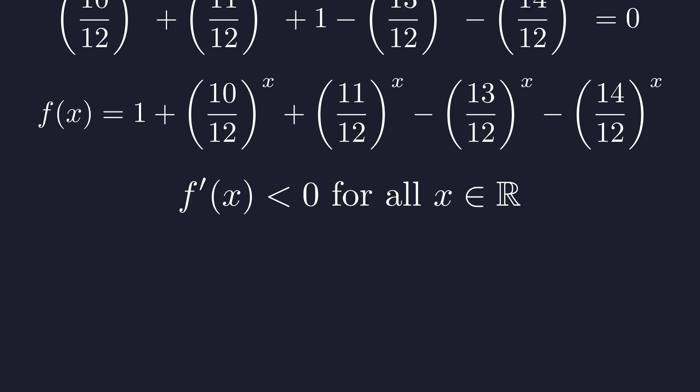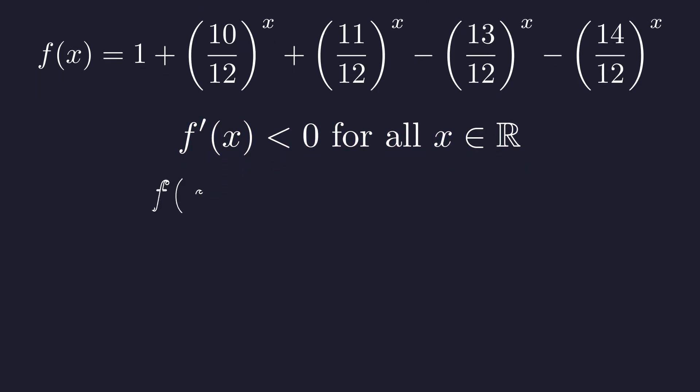When you add up a bunch of negative numbers, you get a negative result. This means our derivative is always negative everywhere. And here's why this matters. A function with a negative derivative everywhere is strictly decreasing. A decreasing function can cross any horizontal line at most once, including the x-axis. This guarantees uniqueness.